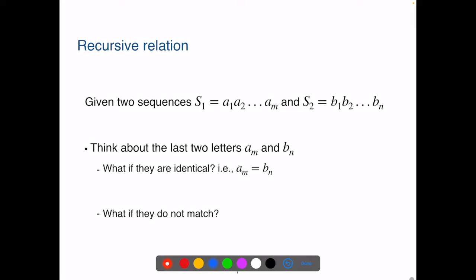Given two sequences S1 and S2, we need to find their largest common subsequence LCS. How can we reduce the original problem? How can we reduce S1 and S2 by one letter? Think about the last two letters, AM and BN. What if they are identical? We reduce the problem LCS that considers A1, A2 to AM-1, B1, B2 to BN-1. Then we just need to add one to the result, because the last letter is the same.